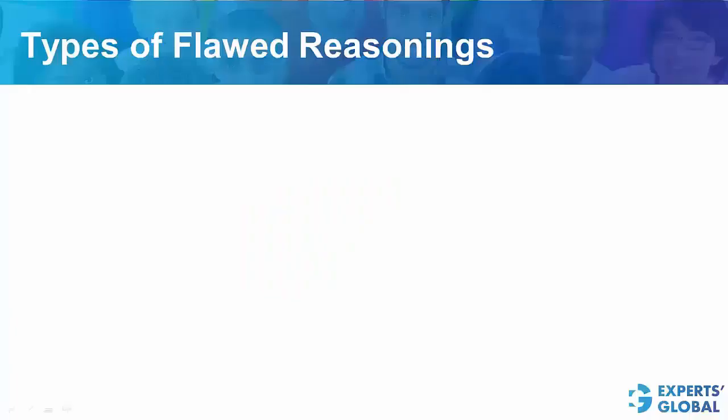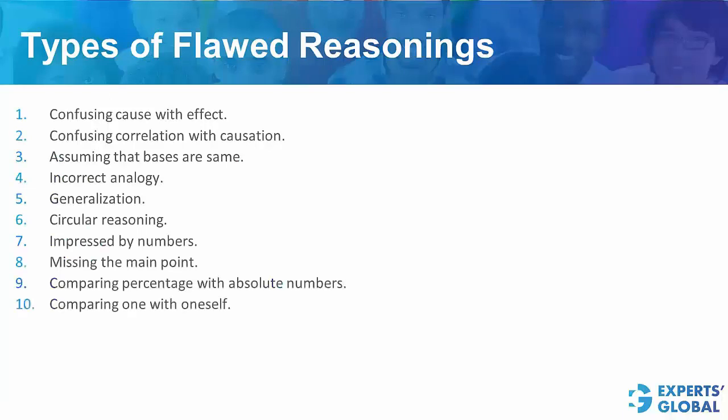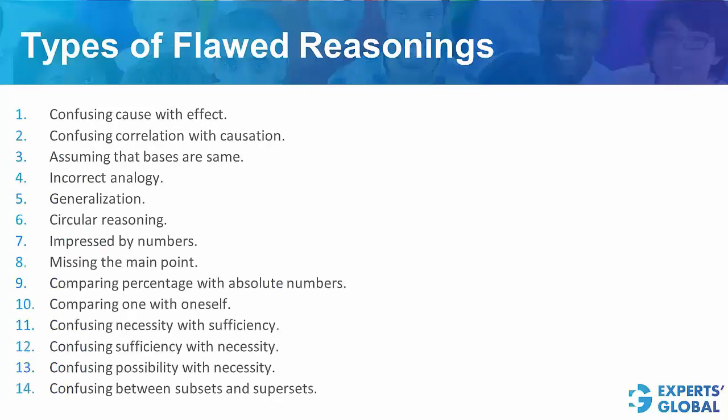In all, we will be discussing 14 different types of flawed reasoning. Here is an exhaustive list of the types of flawed reasoning. It's a list of 14 different flaws. You don't have to remember these flaws. You may just want to pause the video and accustom yourself with the list. But remembering these terms is not needed at all. It is just about understanding the underlying concepts.